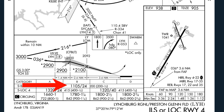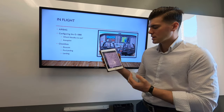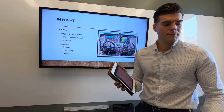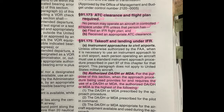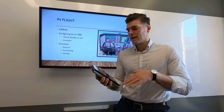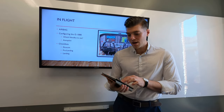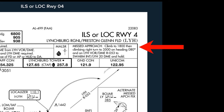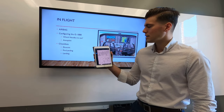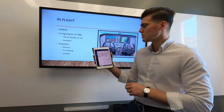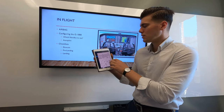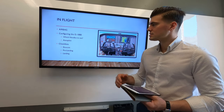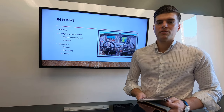For ILS Runway 4, the decision altitude is 1,105 feet with a horizontal visibility of 2,400 feet. When we descend to that point and have the runway environment in sight, as stated in FAR 91.175, we are free to descend below our decision altitude and land. If not, we must execute a missed approach: climb to 1,800 feet, then a climbing right turn to 3,500 feet on a heading of 080, then track the Lynchburg VOR radial 053 to the SWARM intersection at 20 DME and hold.